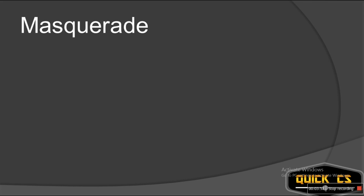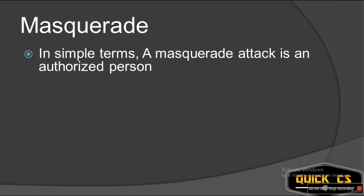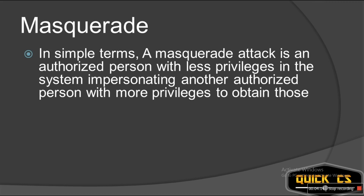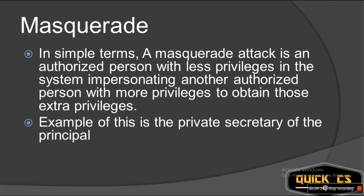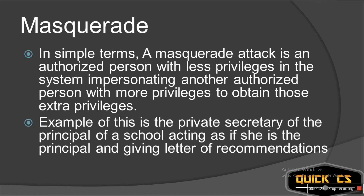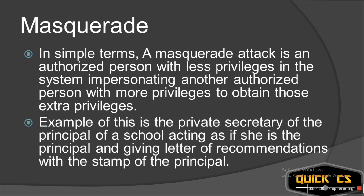What happens in a masquerade attack? Basically, a masquerade attack means a person with little privileges impersonates a person who has more privileges. An example of this would be the personal secretary of a principal of a school. Though the stamp of the principal is kept with her just to use when the principal asks her to, she may use the stamp to give a letter of recommendation to her own personal friends, acting as if she's the principal. This is called a masquerade attack.